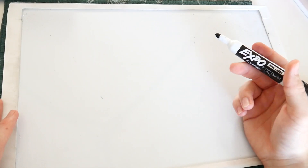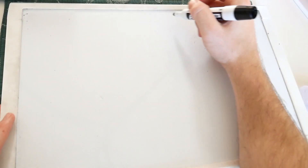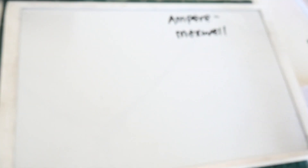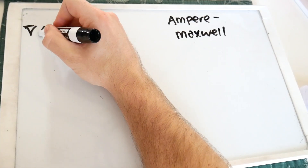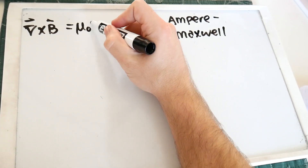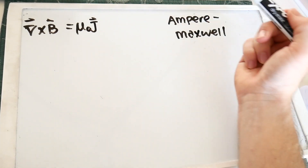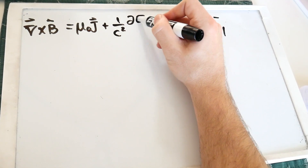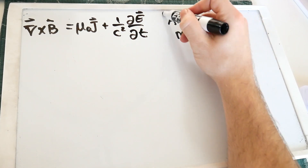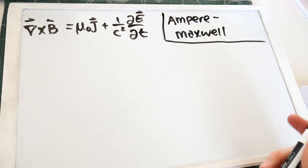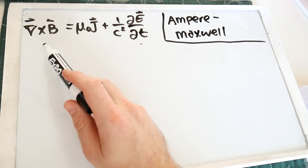The next and final one of Maxwell's equations is the Ampere-Maxwell equation. It tells us that the curl of the magnetic field is equal to the permeability of free space times some current density, plus 1 over c squared times dE/dt. This is just the magnetic analog to Faraday's law — it tells us that a changing electric field generates a magnetic field.